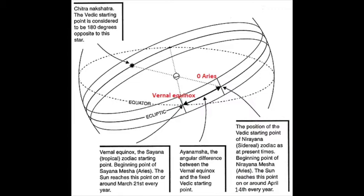The ayanamsha as calculated by Shri Yukteshwar is 21 degrees and 46 minutes. One of the methods to determine zero degree Aries is to use the end point of the last nakshatra Revati.